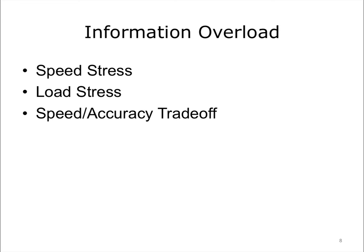Humans can easily go into information overload. If you are under pressure to increase the pace of your performance, or you are burdened by a heavy information load, the quality or accuracy of performance is likely to degrade. There is a speed-accuracy trade-off: as you increase your speed of performance beyond a certain threshold, you increase the probability that the quality or accuracy of your work will degrade.